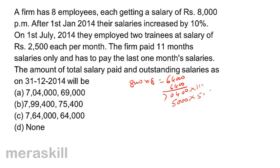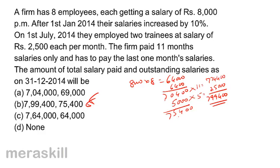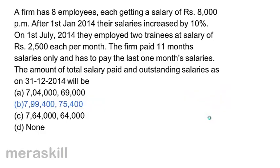70,400 into 11 months is 7,74,400, plus 25,000 (trainees for 5 months) giving us 7,99,400. Outstanding: 5,000 for one month is outstanding, plus 70,400, totalling 75,400. Therefore, 7,99,400 is the salary paid and outstanding salary is 75,400. Correct answer is option B.